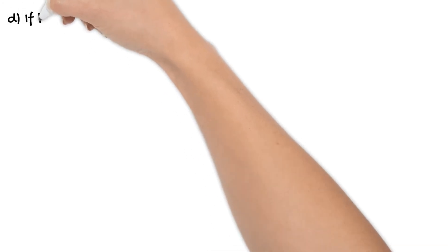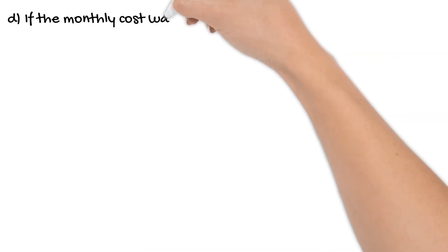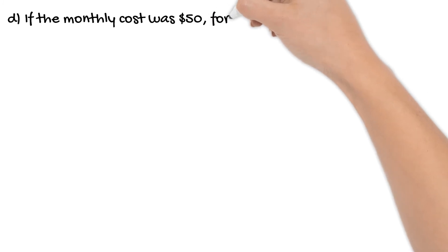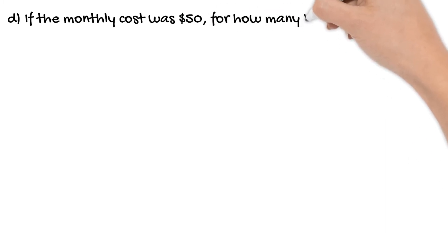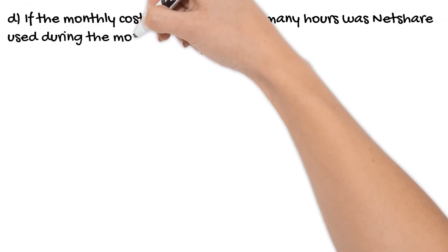Quite often you'll be asked another question where you need to find the other variable given the first one. This example is: if the monthly cost was $50, for how many hours was NetShare used during the month? Again, you can look at the graph to find this, but I do want to show you how to use the rule to find the variable.